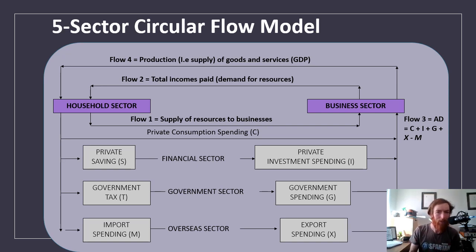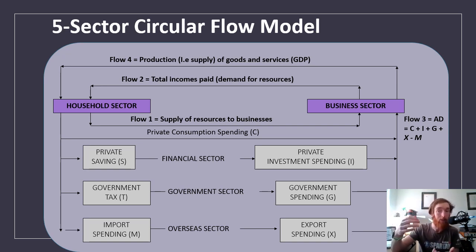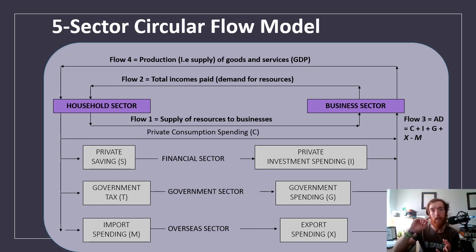In Unit 1 you looked at the two-sector circular flow model — the flows between the household sector and business sector — and we'll build on that. Households provide resources to businesses through their land, labor, and capital. Most of the time it's labor — sometimes we might rent property to them so they can use it for their business. Businesses give households incomes in return — they pay rent, wages, or dividends, like shares of their profits.